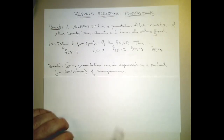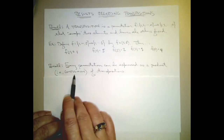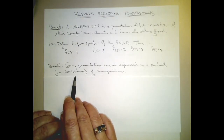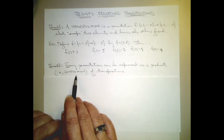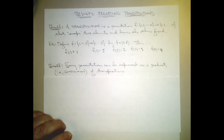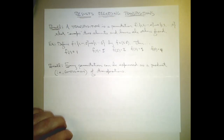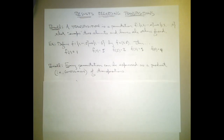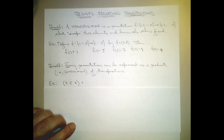And by product, we're talking about composition - composition is the operation on functions that we're assuming. So we saw that every permutation can be expressed as a product, a composition, of transpositions. Let me recall why that was the case.